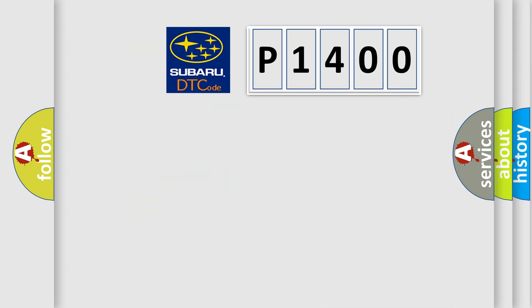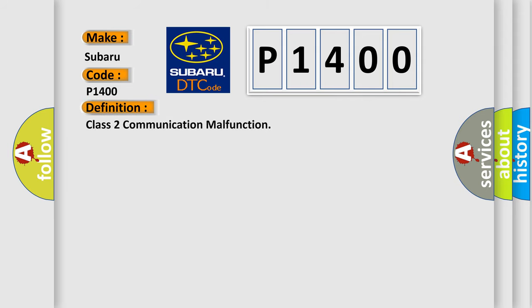The number itself does not make sense to us if we cannot assign information about what it actually expresses. So, what does the diagnostic trouble code P1400 interpret specifically for Subaru car manufacturers? The basic definition is: Class 2 communication malfunction.